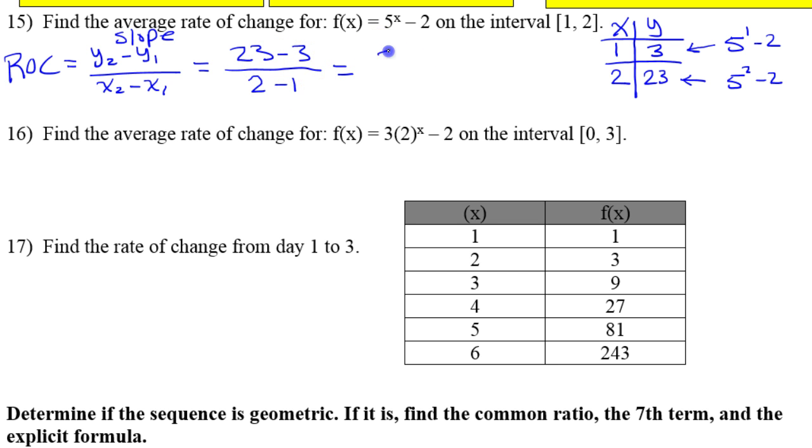Okay, so that's just going to be 20 over 1, which of course just equals 20. So that is the average rate of change of this exponential function on this interval. So let's do it again.